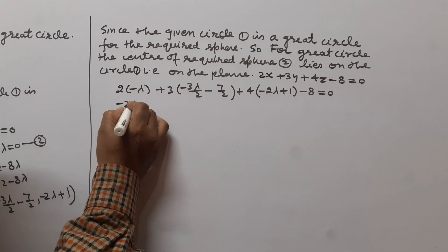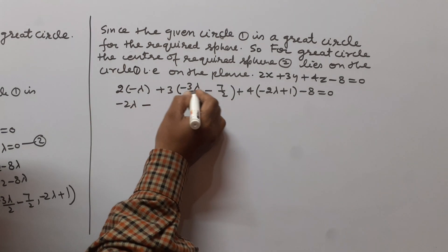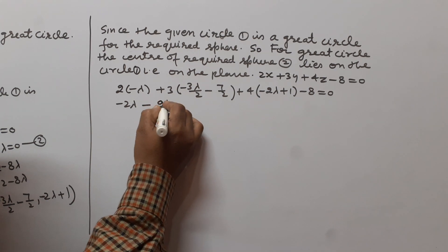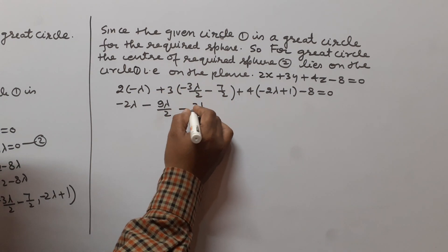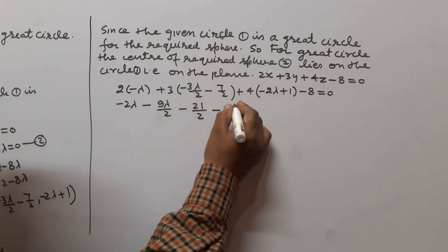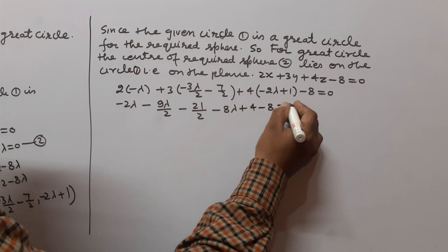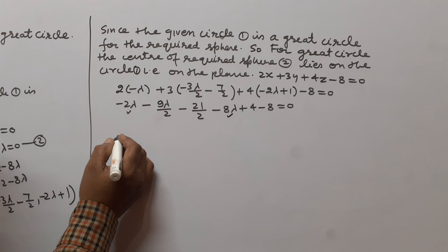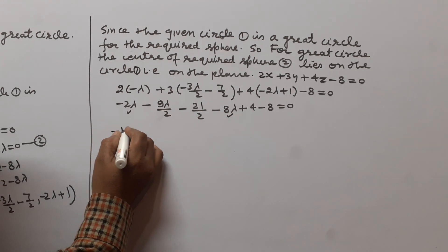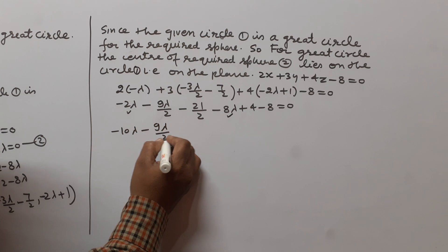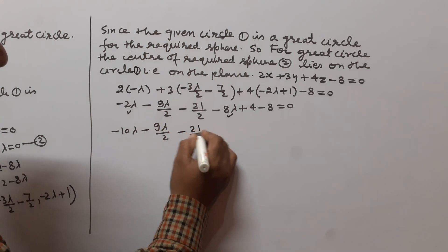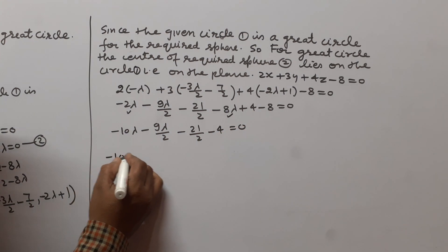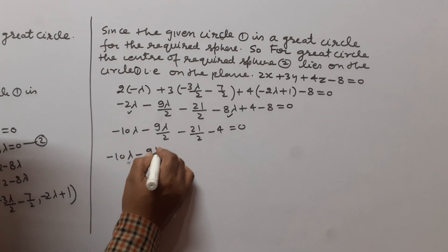Expanding: 2(-λ) = -2λ; 3(-3λ/2 - 7/2) = -9λ/2 - 21/2; 4(1 - 2λ) = 4 - 8λ, minus 8 equals 0. Combining λ terms: -2λ - 9λ/2 - 8λ = -10λ - 9λ/2 = -29λ/2. Constant terms: -21/2 + 4 - 8 = -21/2 - 4 = -29/2.